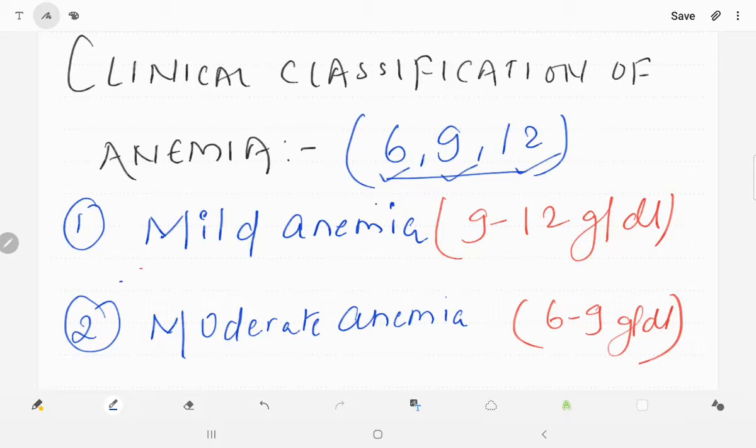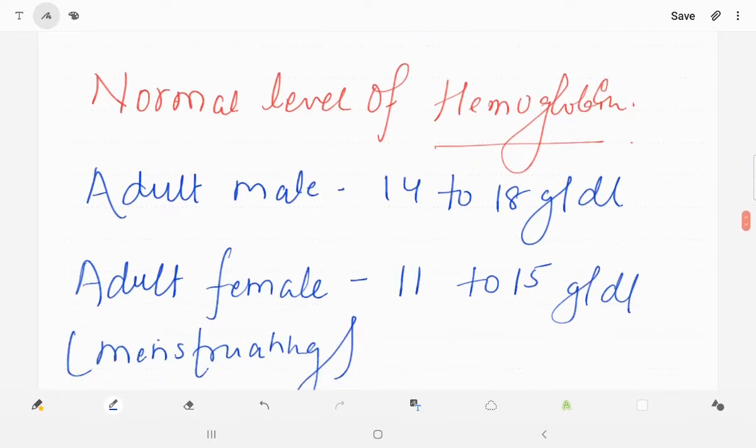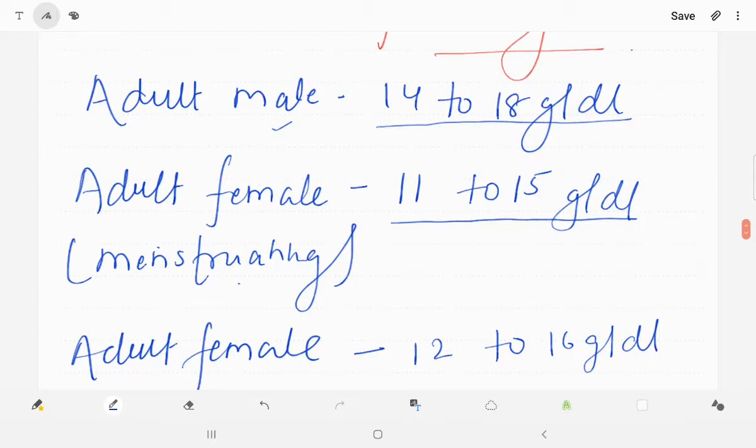What is mild anemia? When the hemoglobin level is 9 to 12 grams per deciliter. But before that, let's see what is the normal hemoglobin level in an individual. Adult male it is 14 to 18 grams per deciliter. In adult female it is 11 to 15 grams per deciliter, but who is menstruating.